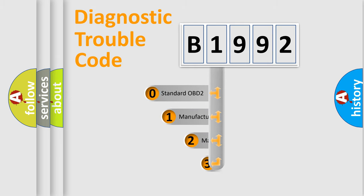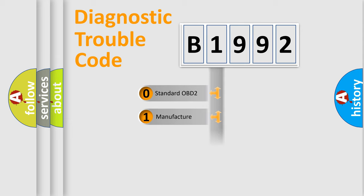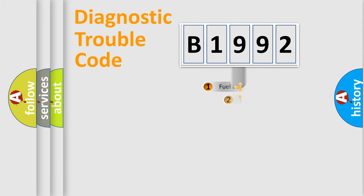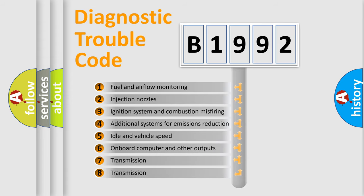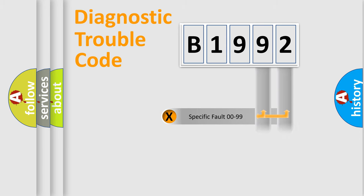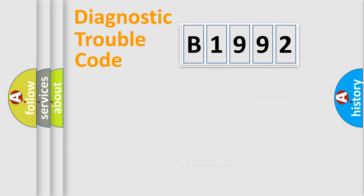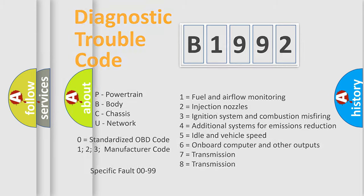This distribution is defined in the first character of the code. If the second character is expressed as zero, it is a standardized error. In the case of numbers 1, 2, or 3, it is a more specific car-manufacturer error. The third character specifies a subset of errors. This distribution is valid only for the standardized DTC code, and only the last two characters define the specific fault of the group — but only when the second character is zero.